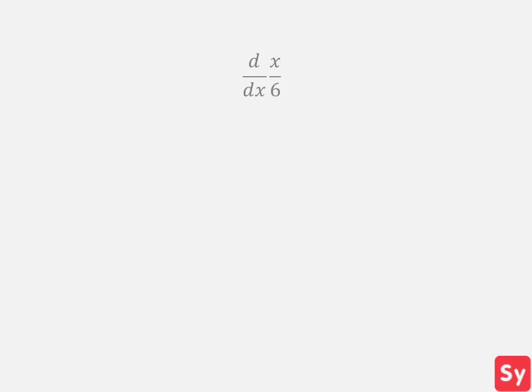Next example. We want to compute the derivative of x over 6. We can rewrite this as the derivative of 1/6 times x. Since 1/6 is a constant being multiplied to x, a function, we can use the multiplication by a constant rule.